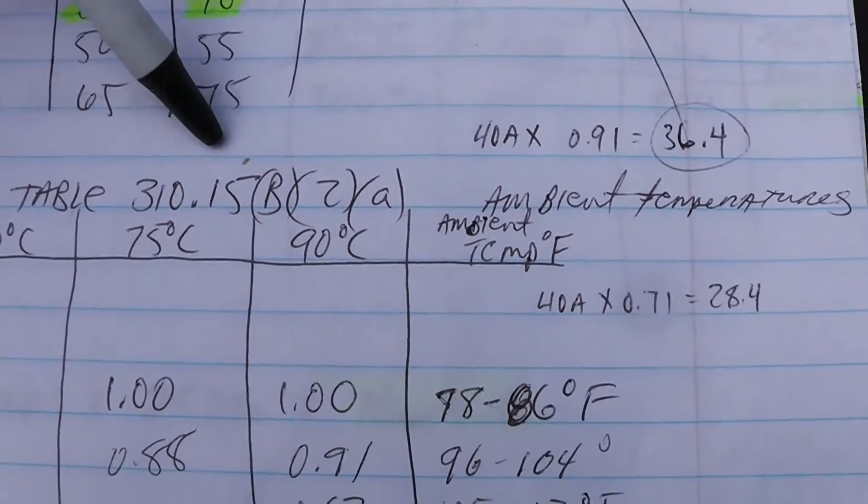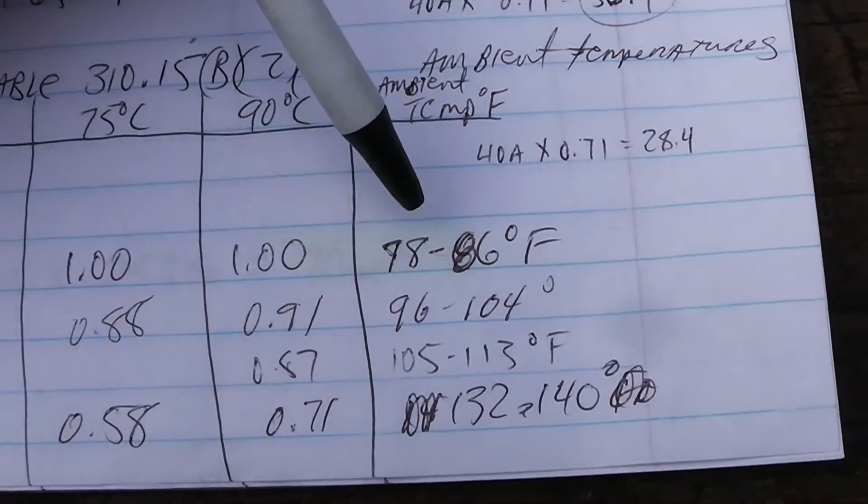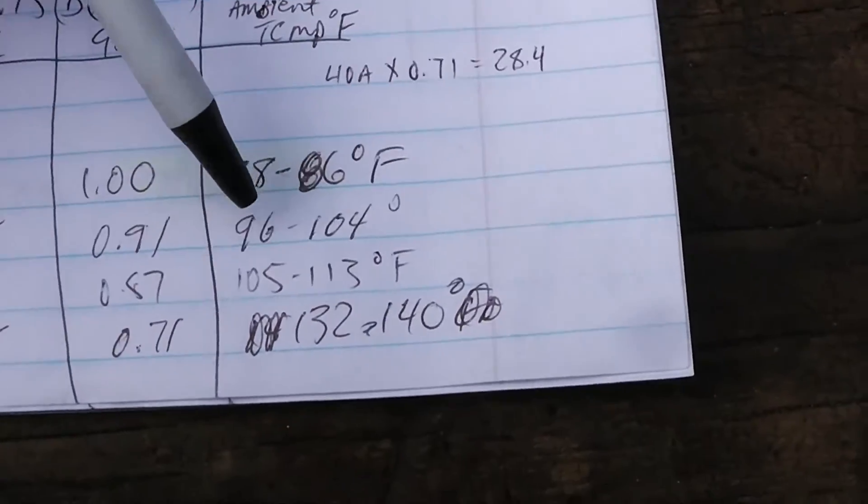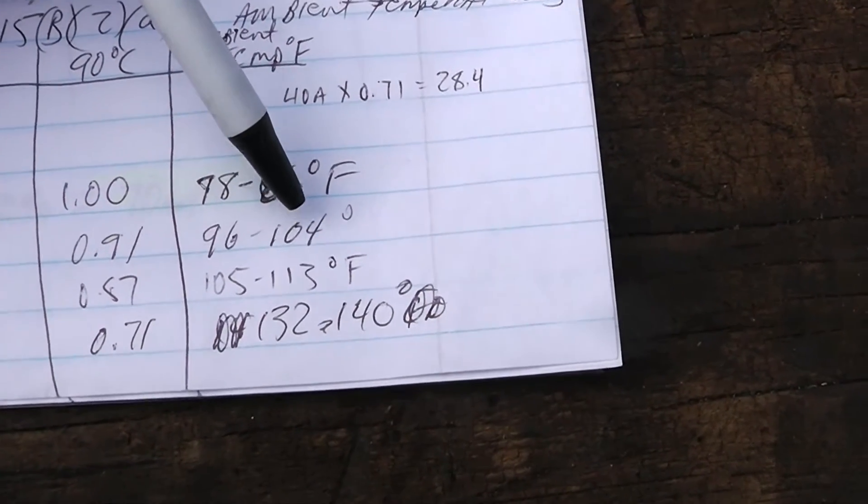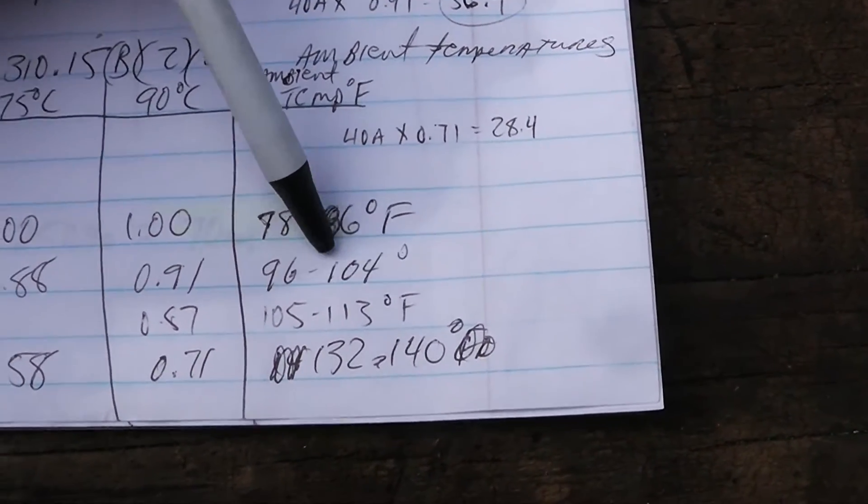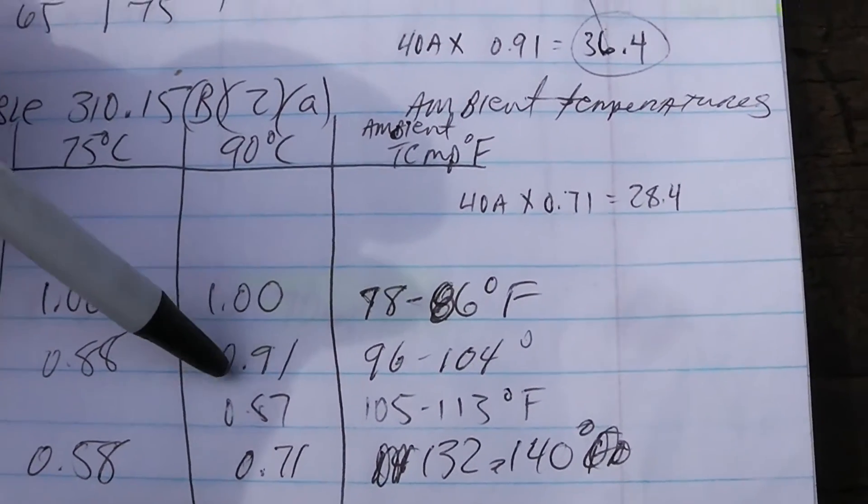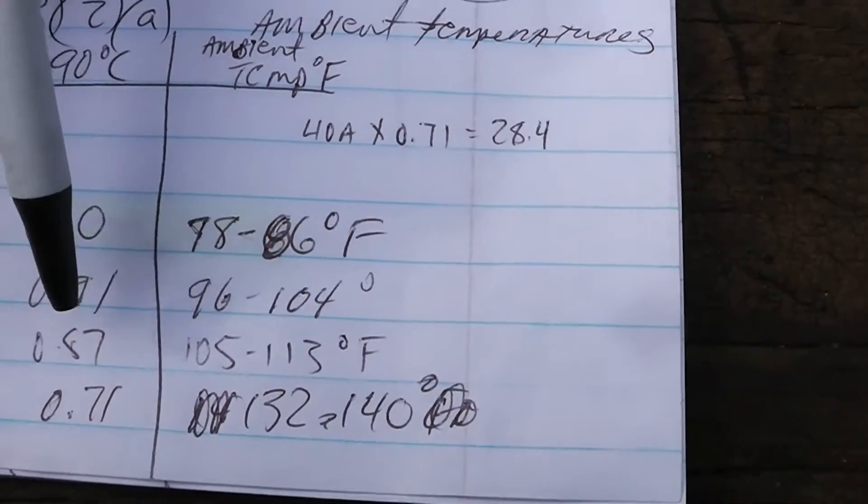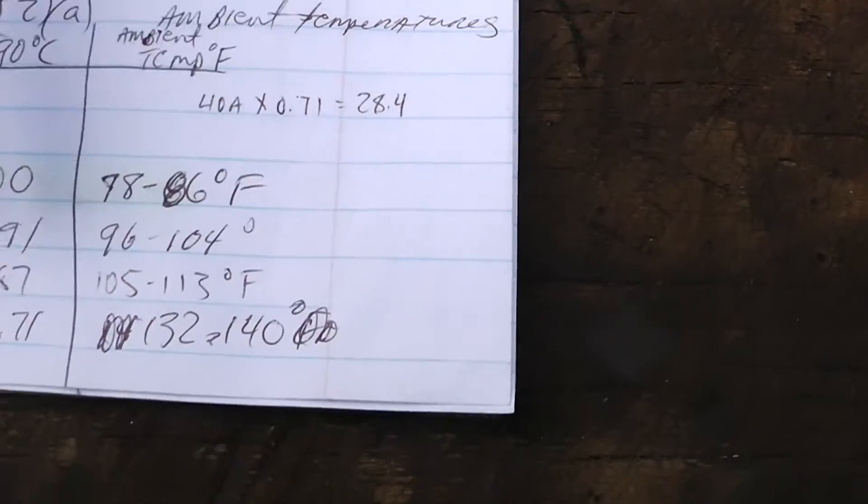You have to derate the conductor according to the ambient temperature. If you go to table 310.15b2a, you'll see a table of ambient temperatures. We're in the 90 degree column, and if our temperature around here is this, we don't derate the wire. Let's say our ambient temperature is 96 to 104. I'm in Florida and the highest temperature we've ever had here was 99 degrees in 1985, so I'm in this range. If we multiply - we're in the 90 degree column - 91 times the 40 amps, that says that wire can handle 36.4 amps.